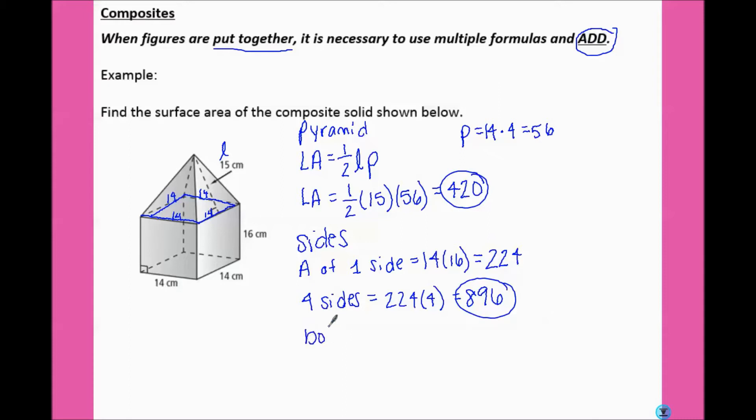Now for the bottom of the box, area is length times width, which would be 14 times 14, which is 196. So to find the surface area of the whole shape would be 420 plus 896 plus 196, which altogether gives us 1512. And then our units were centimeters, and since we're dealing with area, it's centimeters squared.